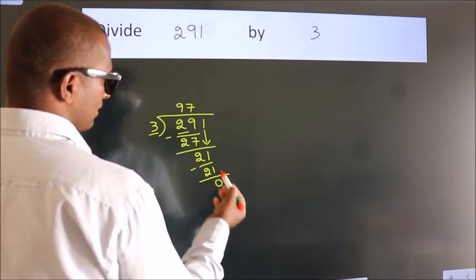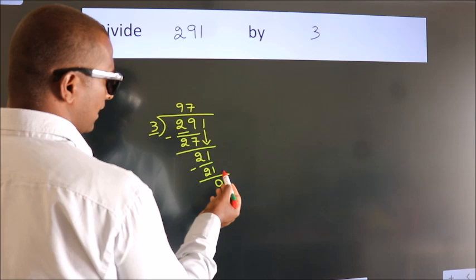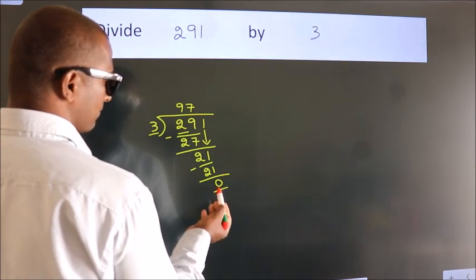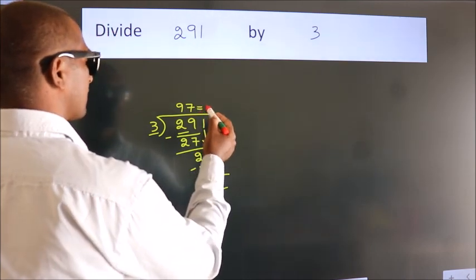After this, no more numbers to bring it down. And we got remainder 0. So this is our quotient.